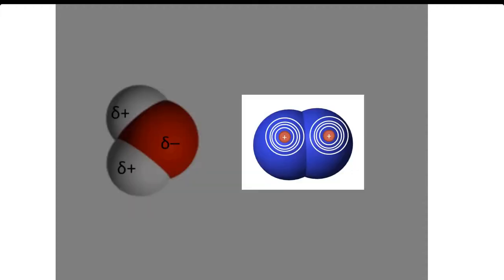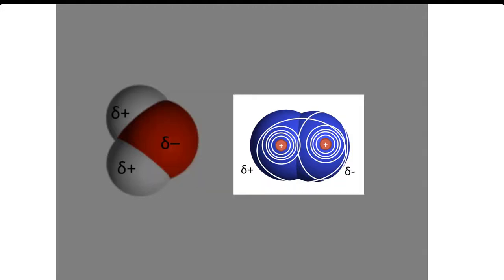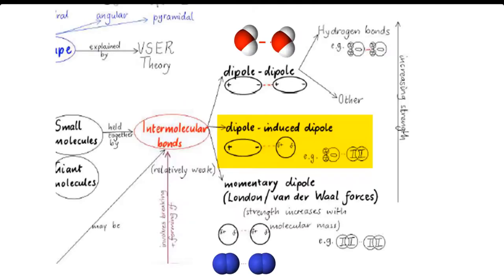A polar molecule can induce a dipole in a non-polar molecule. The negative end of the polar molecule, for example, repels electrons in the non-polar molecule to the side further away from it, creating slight positive and negative ends, as shown here. These dipole-induced dipole intermolecular forces are weaker than dipole-dipole forces, but stronger than momentary dipole forces.